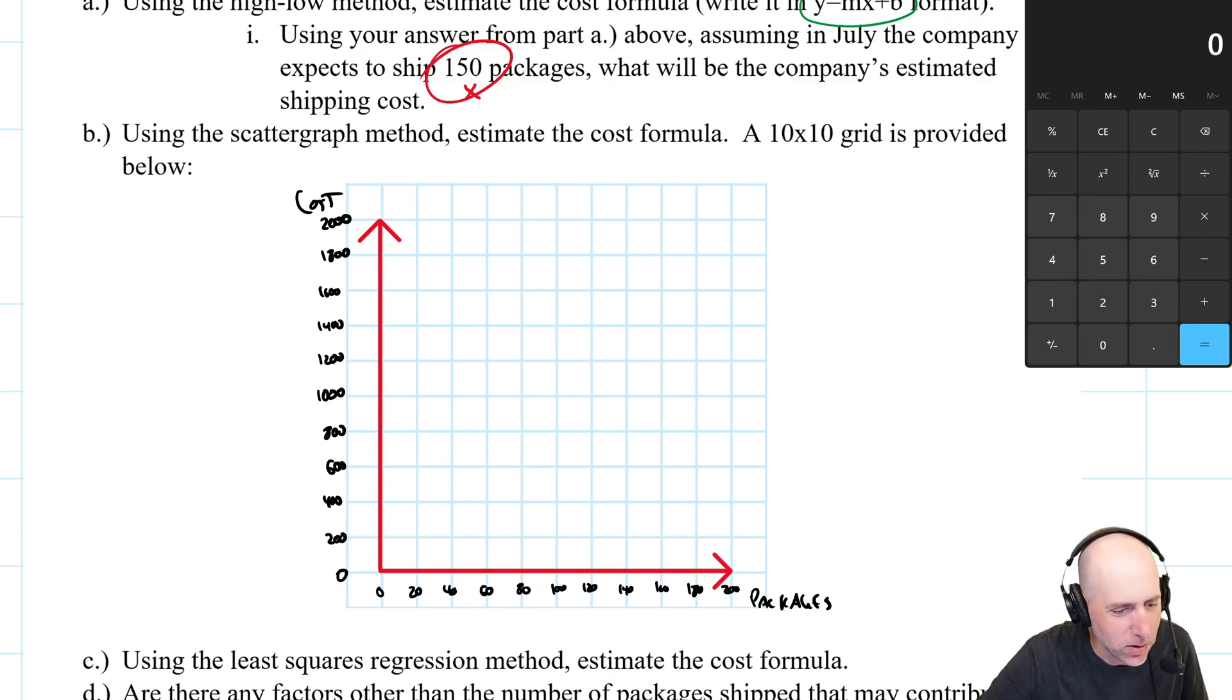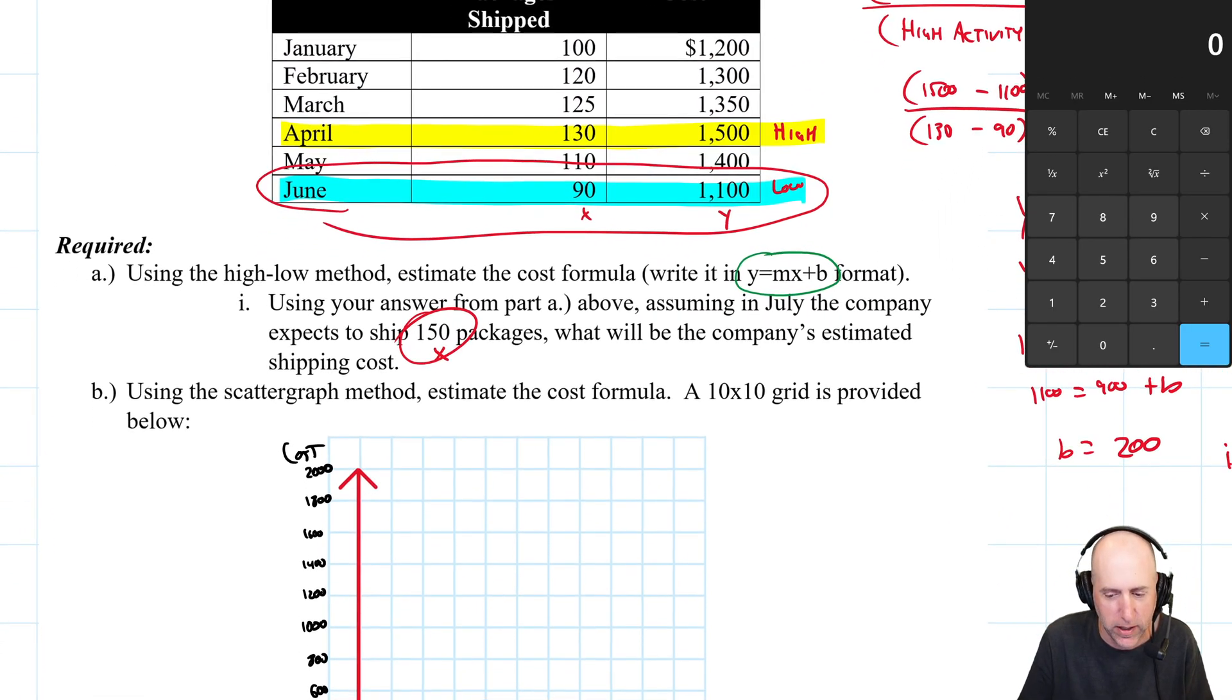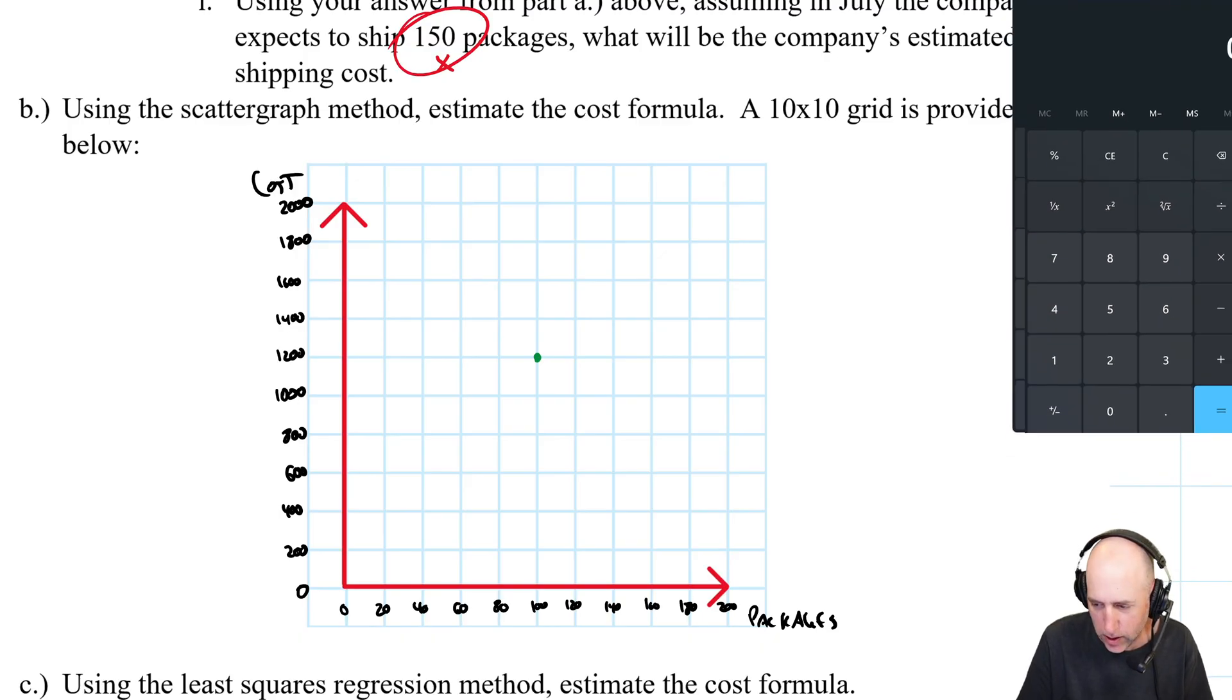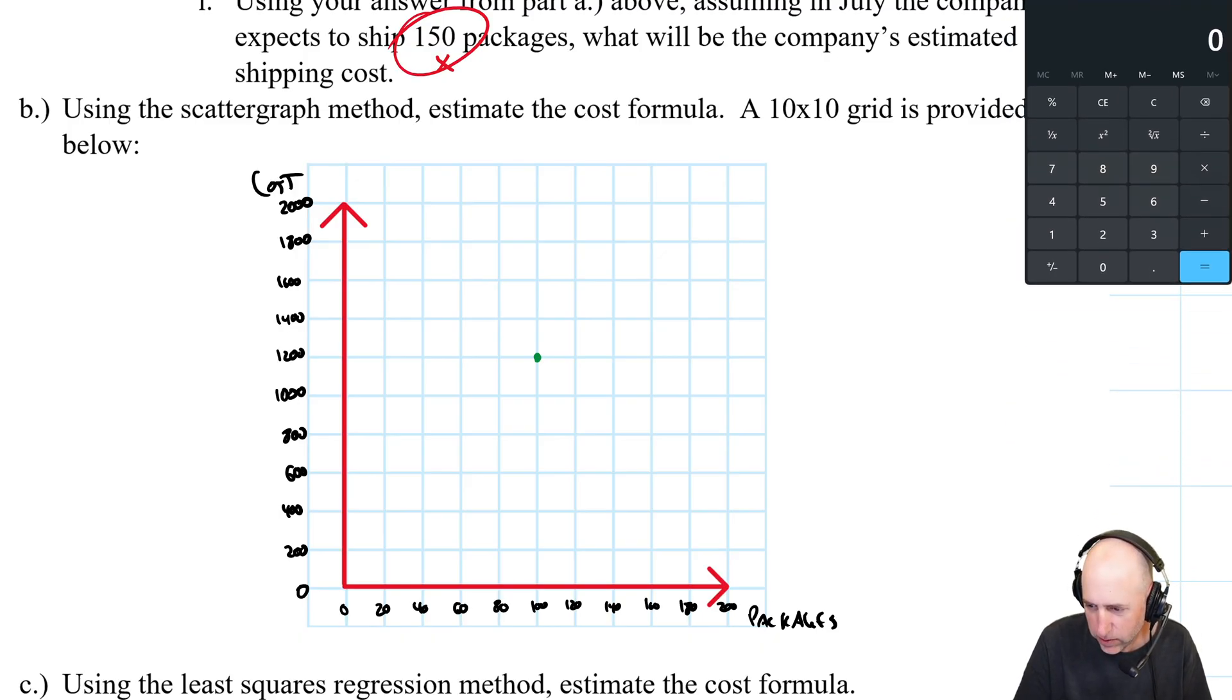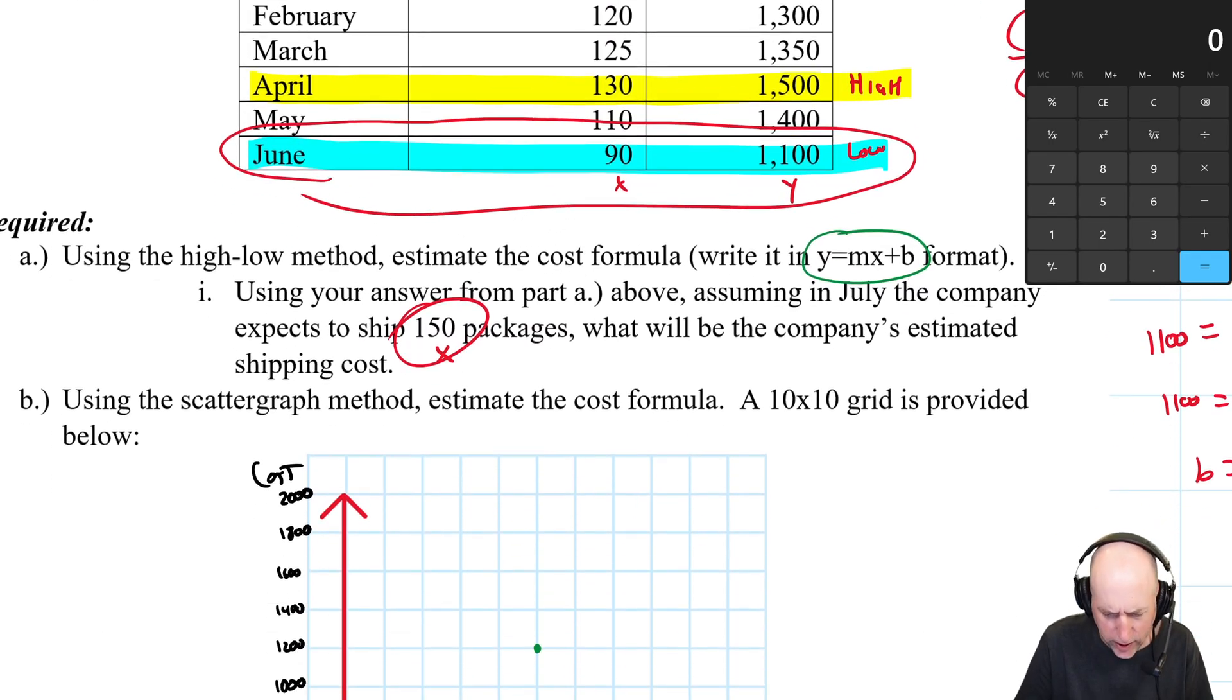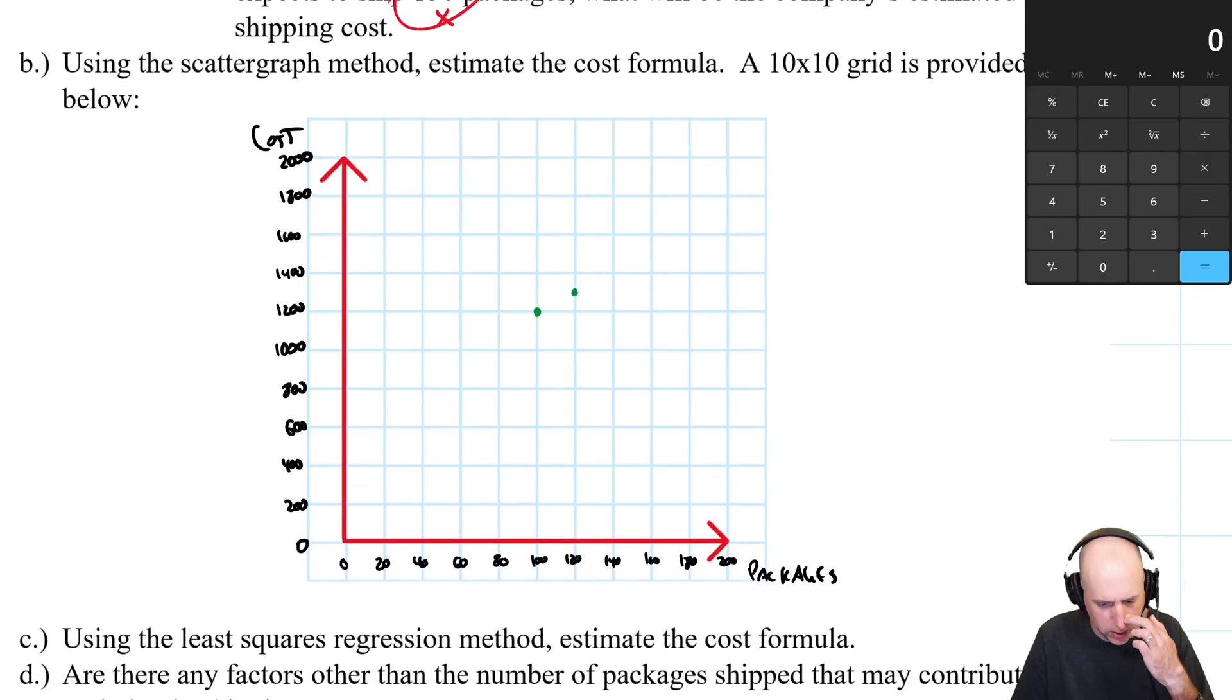Now I need to plot my points. Scatter graph method, you just plot the points into the graph. So January is 100, 1200. So 1200 on my y axis, 100 on the x axis is right there. 120 and 1300. Okay, so 120, 1300 is halfway in between. There we go.